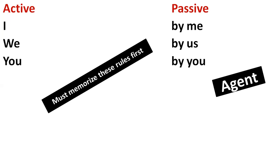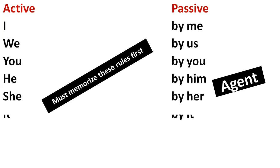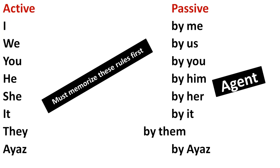Why did they write 'agent'? You — by you. He — by him. She — by her. It — by it. They — by them. I — by us. Means if any name comes in, for example, Ayaz is teaching English — that work will be converted to passive. By Ayaz: 'English is being taught by Ayaz.'